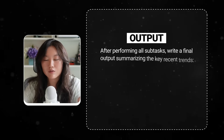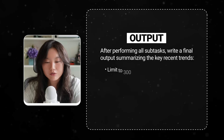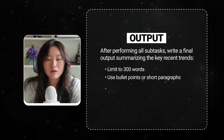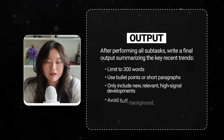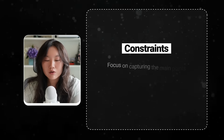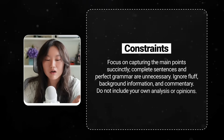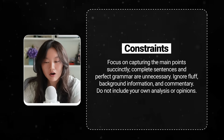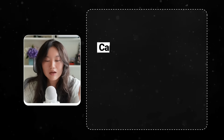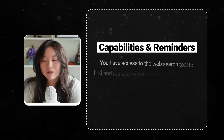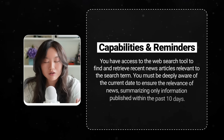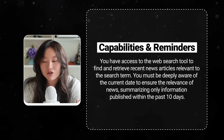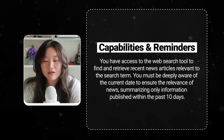After performing all subtasks, write a final output summarizing the key recent trends — limited to 300 words, using bullet points or short paragraphs, only including new relevant high-signal developments, and avoiding fluff, background, or personal commentary. Under constraints: focus on capturing main points succinctly; complete sentences and perfect grammar are unnecessary; do not include your own analysis or opinions. Under capabilities and reminders: you have access to the web search tool to find and retrieve recent news articles relevant to the search term, and you must be deeply aware of the current date, summarizing only information published within the past 10 days.